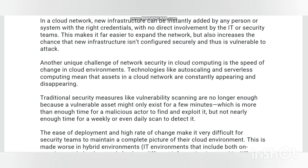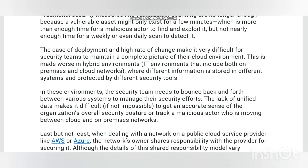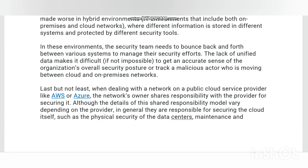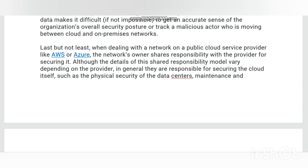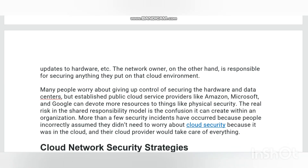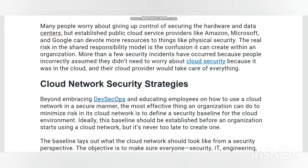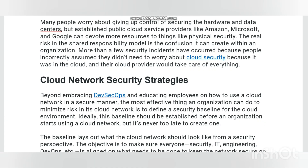Differences between network security and cloud network security: a traditional network is basically two or more computing systems that are connected by wired or wireless technology. A corporate network might include tens or hundreds of thousands of computing systems. Networks enable employees to access and store resources, communicate via email and other means, and share files and other information. Information that is connected to the cloud network is used for the same purposes, but some or all of a cloud network's infrastructure is provided over the internet or other wide area network.